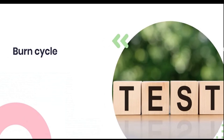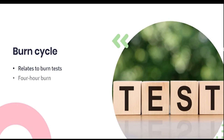A burn cycle is another similar term that we also need to distinguish from the other two. This relates more to the practice of wick testing when we conduct burn tests, something that will be discussed at a later stage in this course. A burn cycle is generally a four-hour period where the candle is allowed to burn undisturbed and is then extinguished and allowed to cool. One would most likely light it again after this to evaluate various aspects of the candle's performance.